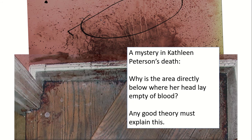Hello everyone. If you've seen the first part on the blood spatter evidence and the owl theory in the Kathleen Peterson case, you'll know that what I'm trying to explain is why the area directly below where Kathleen is - why is this area almost totally free of blood, when that's the area where you wouldn't expect the greatest amount of blood. It's an anomaly, it's hard to explain, and I think it's difficult for the theory that Michael committed the murder.